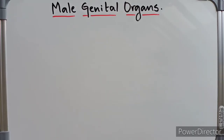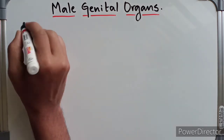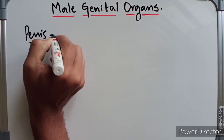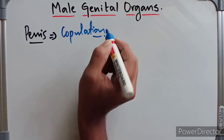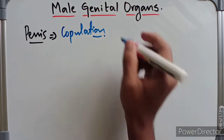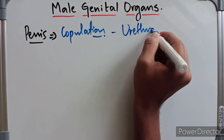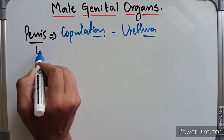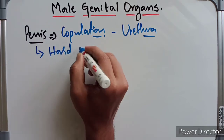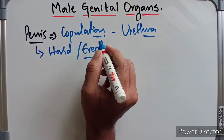Hello guys, welcome. In this video we are going to look at the anatomy of the penis, the structures and parts of the penis, and also the supports of the penis. The penis is a male organ for copulation. It is traversed by the urethra, which helps in the passage of urine and semen. It is also capable of becoming hard and erect, which helps in the copulation purpose.